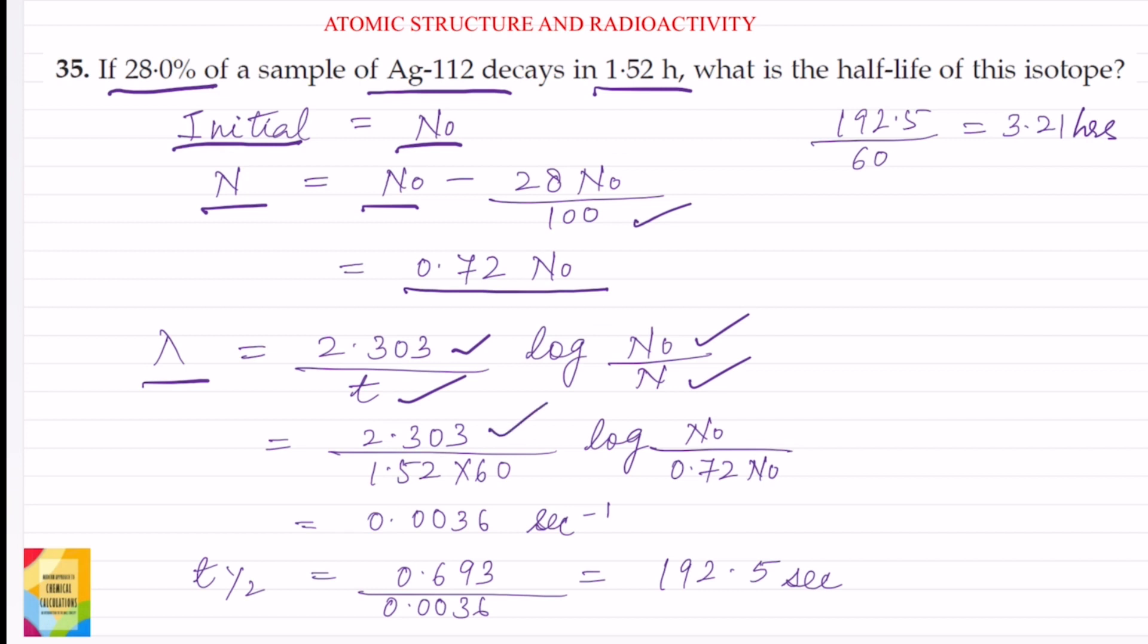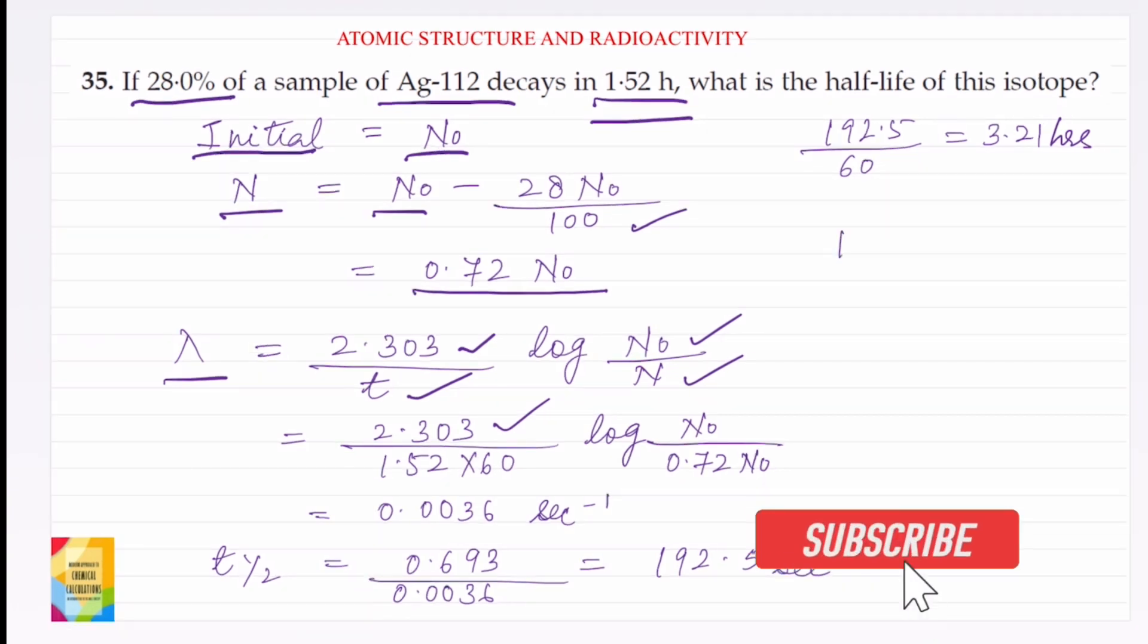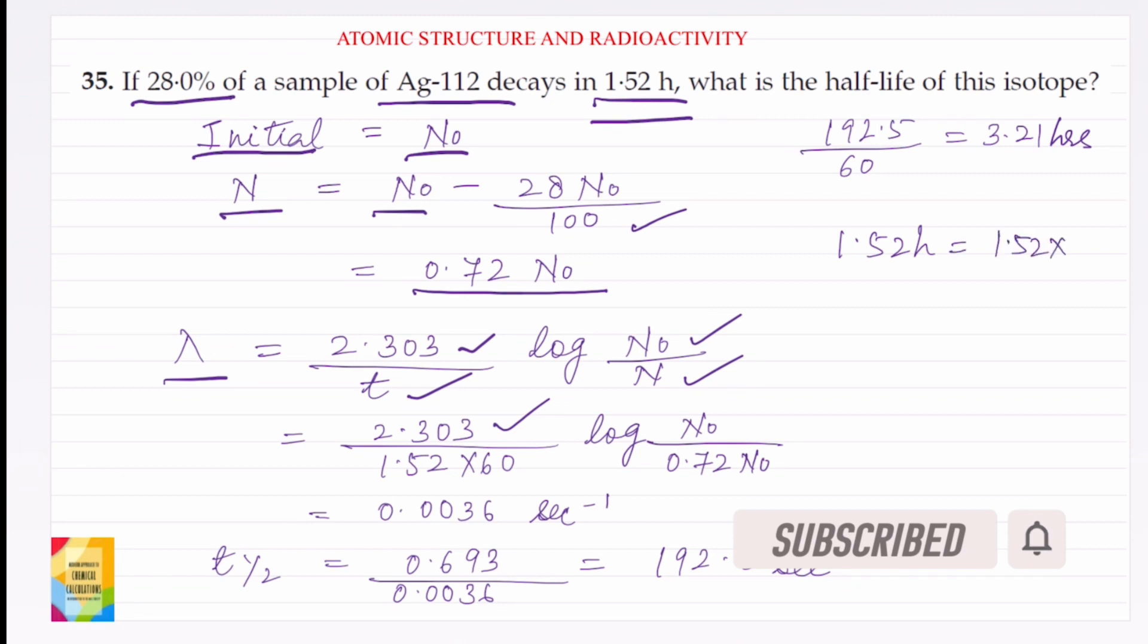2.303 divided by time, given is 1.52 hours, but we need to take time in seconds here. So we will convert hours into seconds. 1.52 hours is equal to 1.52 into 60 seconds.